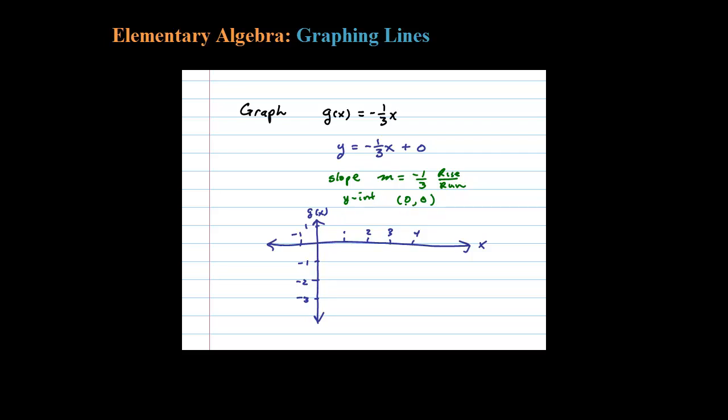Let's graph it. Always start at the y-intercept, in this case (0,0). We're going to mark off the slope from there: down 1 (negative 1 rise) and a 3 run will get you the second point, (3, -1).